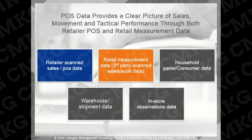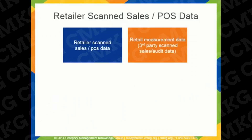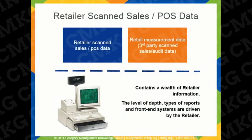These data sources provide a clear picture of sales, movement, and tactical performance, and also give a real-time view of category performance and trends. In the full course, we explore retailer POS data looking at how the data is derived, the key data variables it provides, and some key strategic applications of the data. We then complete our review of POS data looking at retail measurement data. We will only be touching on some of these training components in this course preview.